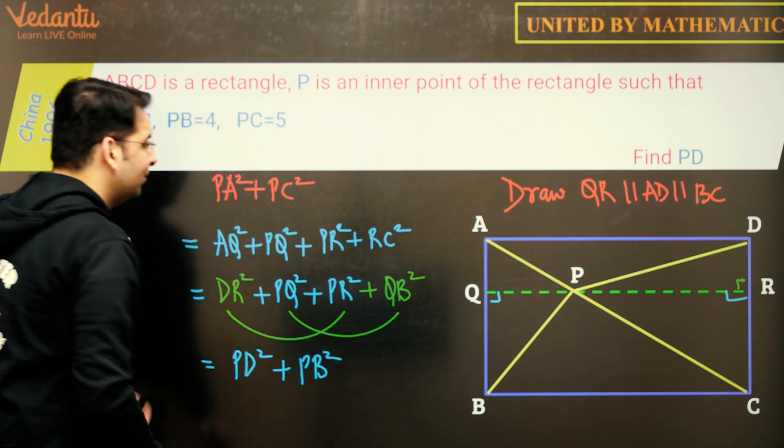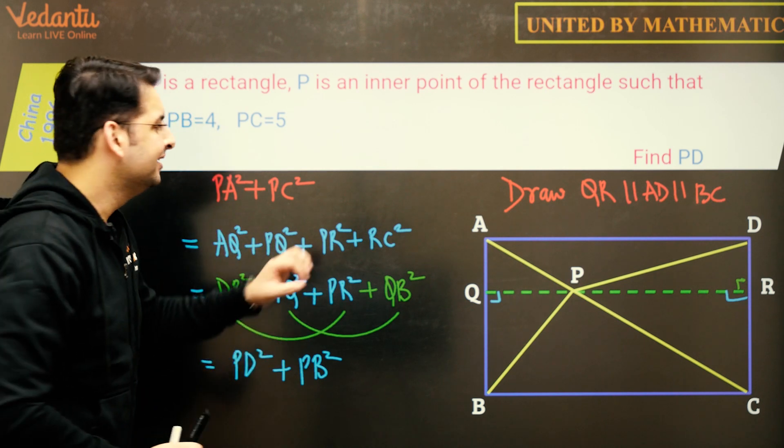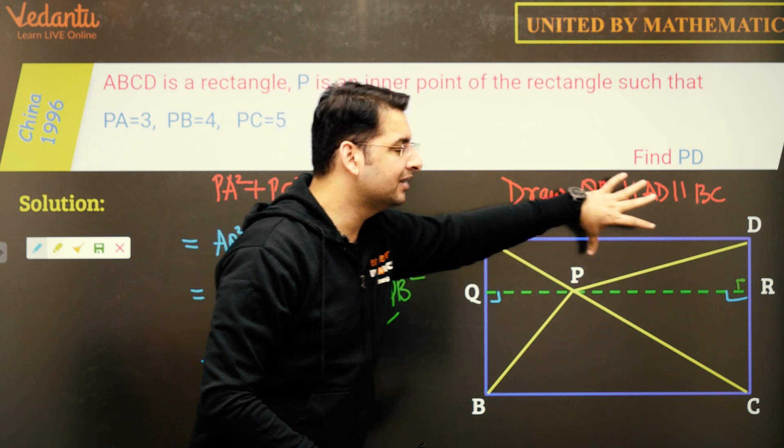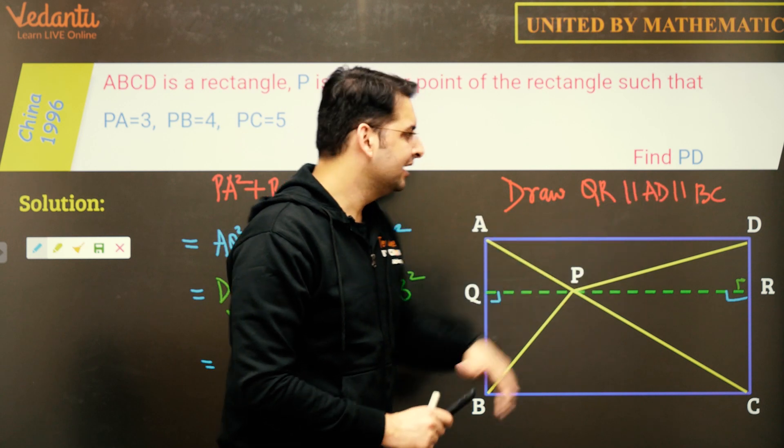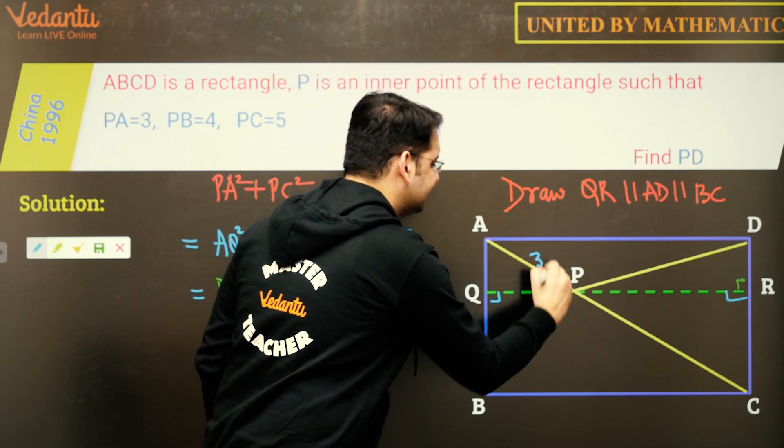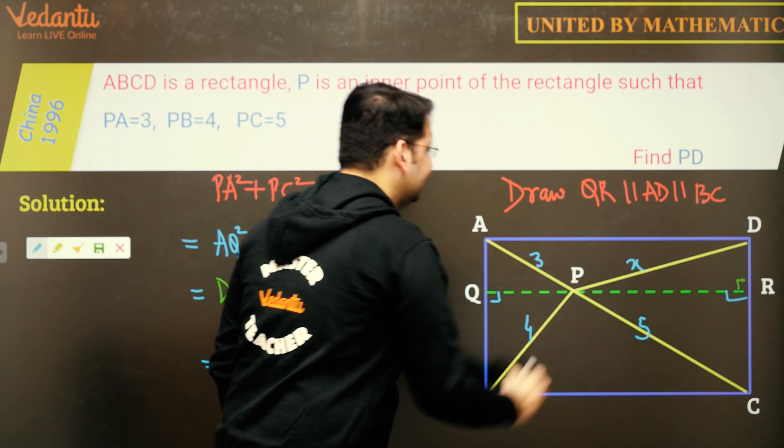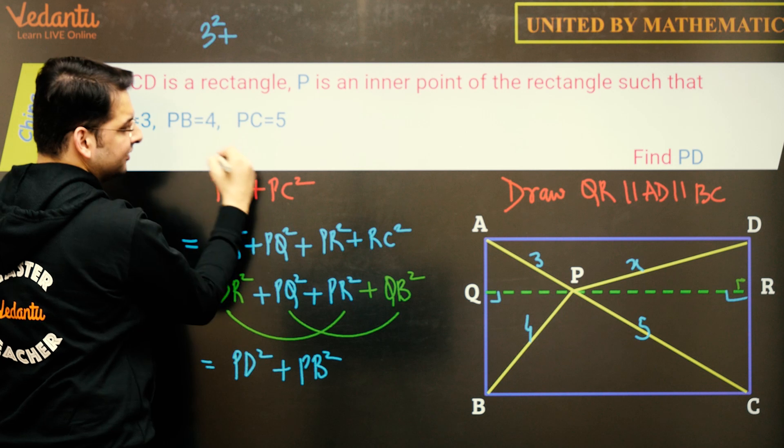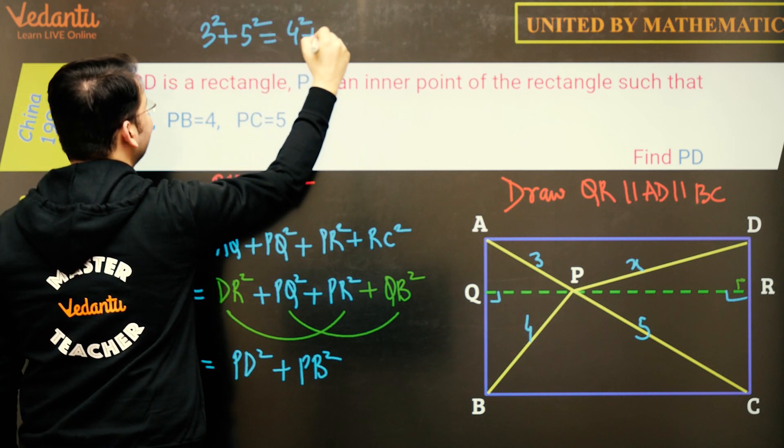So if P is any point inside the rectangle, PA square plus PC square is equal to PB square plus PD square. And using this, we can find the value of PD. So if we have this value is 3, this value is 4, this value is 5, let's say this value is X. So clearly, 3 square plus 5 square is equal to 4 square plus X square.